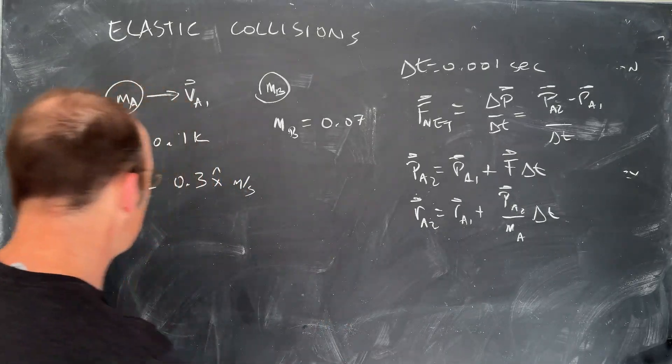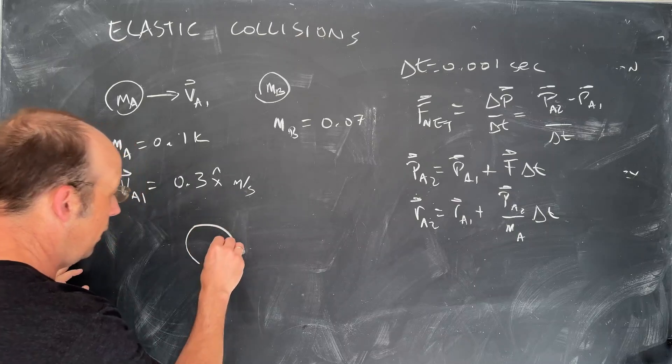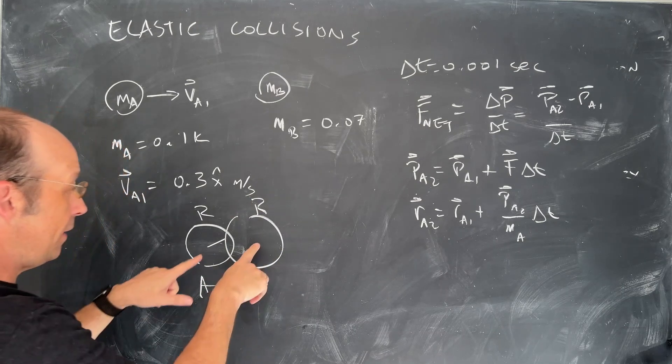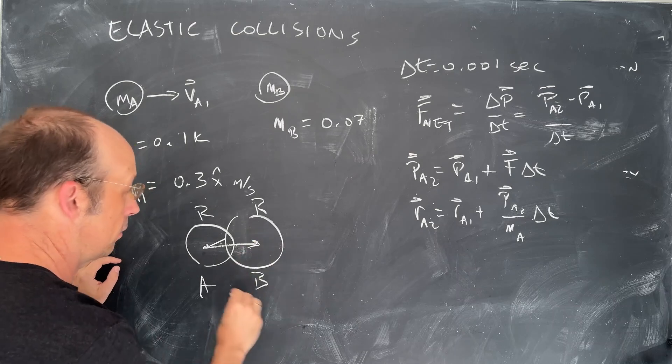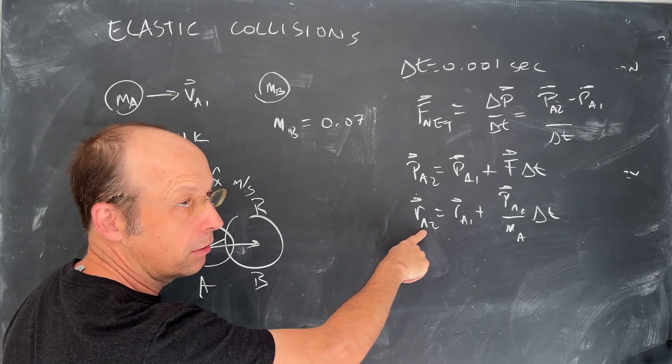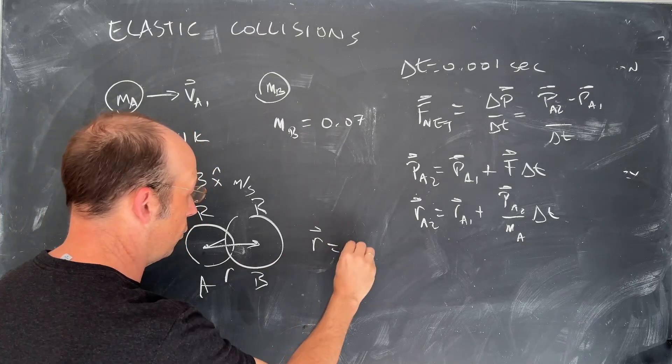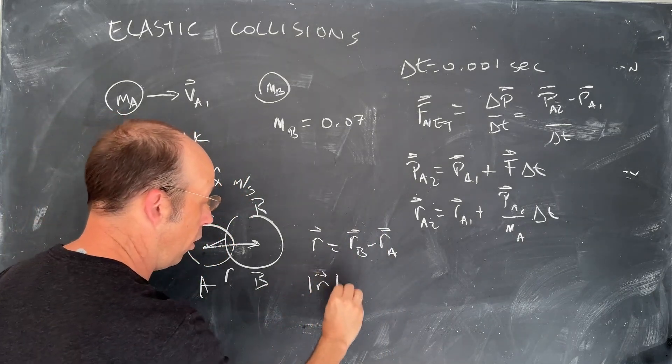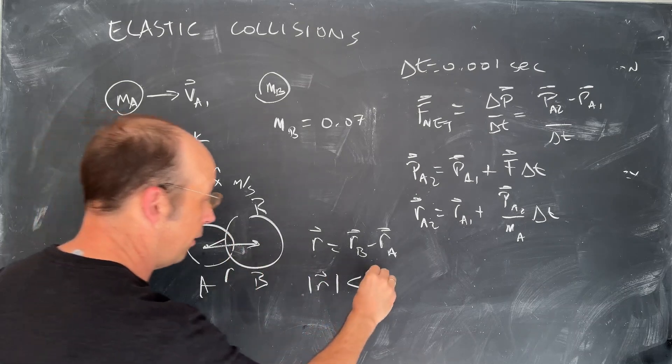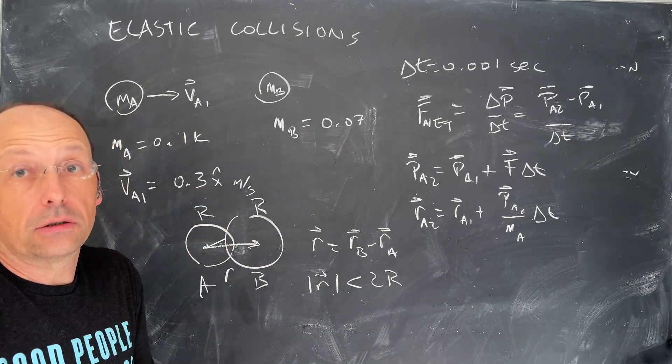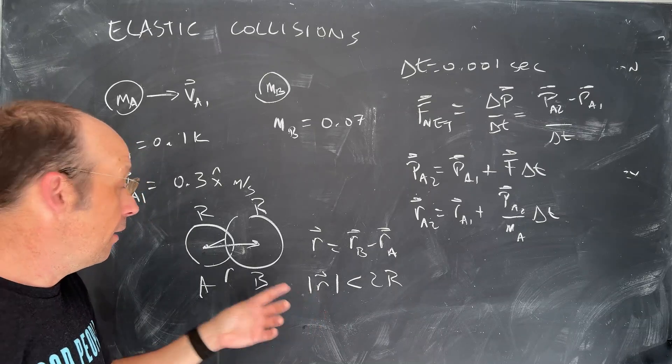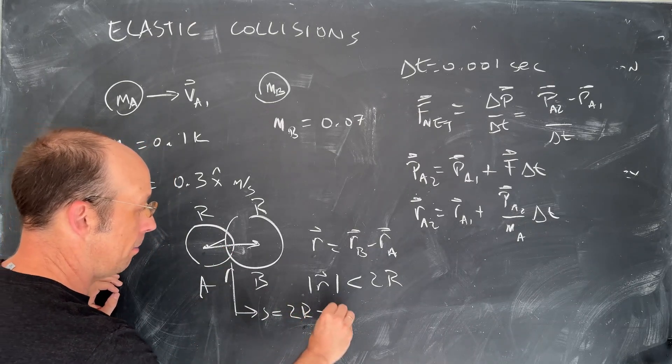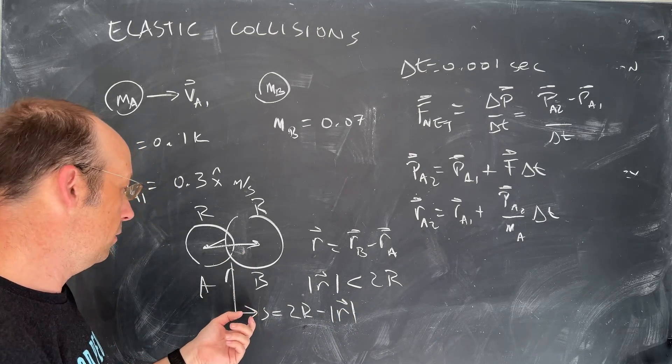Now, what about that force? So the force, what we're going to say is if this is going to be the radius, I'll just call that R. And so this is the other one. It has a radius R. So this is A and B. If the distance between these, I'll call this vector R. If this R, R is going to be equal to RB, the position of B, minus the position of A. If the magnitude of that, if the magnitude of R is less than twice the radius, then there is a collision. And I can set the compression amount. I'll call this S. S is going to be equal to 2R minus the magnitude of R. That's how much it compressed.